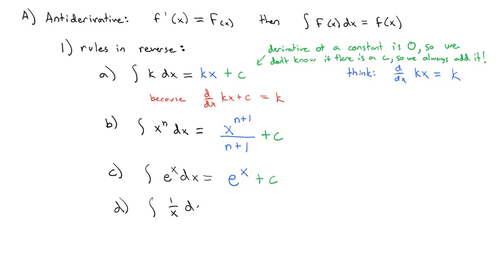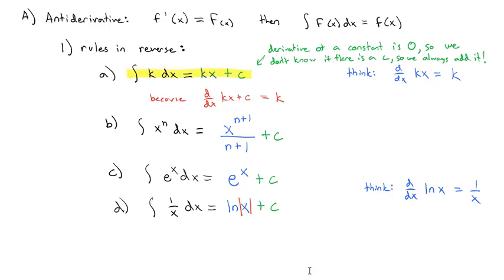The anti-derivative of 1 over x dx is a special case because we can't use the exponent rule. Written as an exponent, it's x to the negative 1. Increasing the exponent by 1 gives 0, and we can't divide by 0. But we should recognize that the derivative of the natural log of x is 1 over x. So the anti-derivative of 1 over x is the natural log of x — technically the natural log of the absolute value of x — plus C. These four rules should be committed to memory.